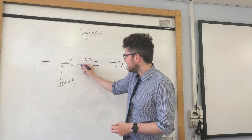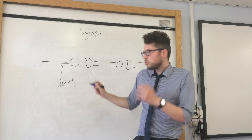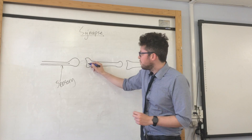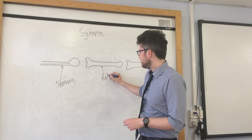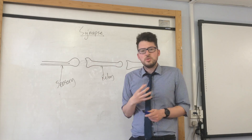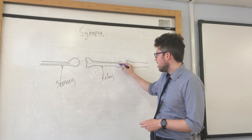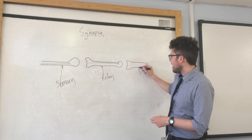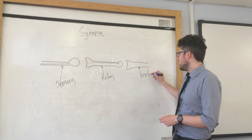What happens is when the electrical impulse reaches the end of the sensory neuron, the sensory neuron releases a chemical which diffuses across the gap and then binds to the relay neuron. Once that chemical signal reaches the relay neuron, an electrical impulse is generated, and then the same would happen between the relay neuron and the motor neuron.